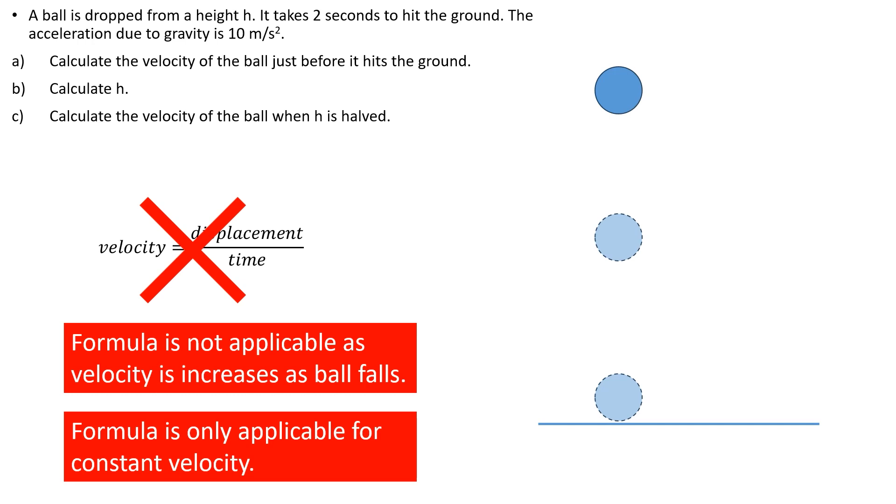Now to dive into how to start solving the problem. Let us begin by labeling the three points of interest: A at the top of the fall, B when h is halved, and C just before the ball hits the ground. Next put in all the variables that we know first.